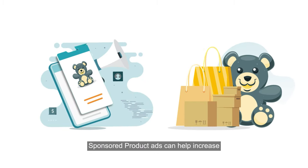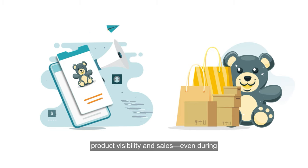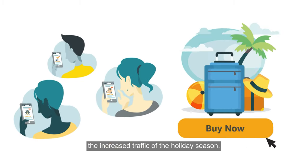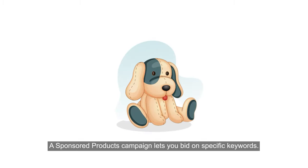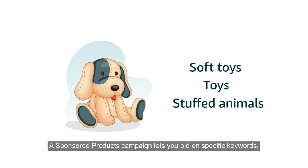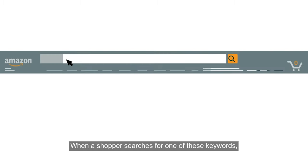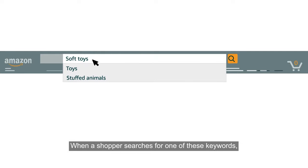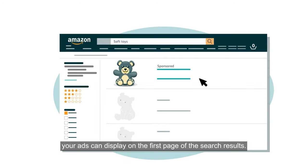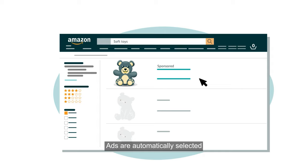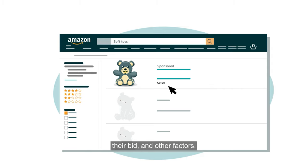Sponsored product ads can help increase product visibility and sales even during the increased traffic of the holiday season. A sponsored products campaign lets you bid on specific keywords. When a shopper searches for one of these keywords, your ads can display on the first page of the search results. Ads are automatically selected to appear based on their overall relevance, their bid, and other factors.